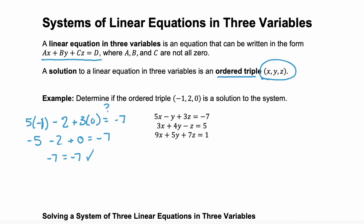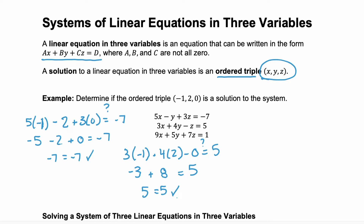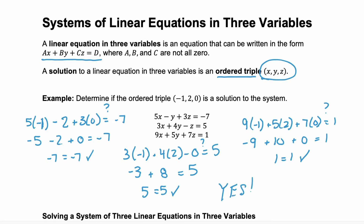But just because that ordered triple worked in the first equation doesn't make it a solution to the system. We have to check the other equations. Three times negative one plus four times two minus zero equals five — checking that second equation. Negative three plus eight is five. Five equals five. That's true. Now check that third equation: nine times negative one plus five times two plus seven times zero. Does that equal one? Negative nine plus ten plus zero — that's one. One equals one. So yes, the ordered triple (negative one, two, zero) is a solution to the system.